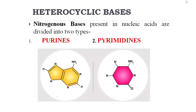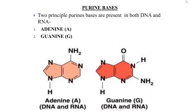For nitrogenous bases, we have purines and pyrimidines. Purines have two rings while pyrimidines have only one ring. The purines are adenine and guanine — they are heterocyclic compounds found in both DNA and RNA.